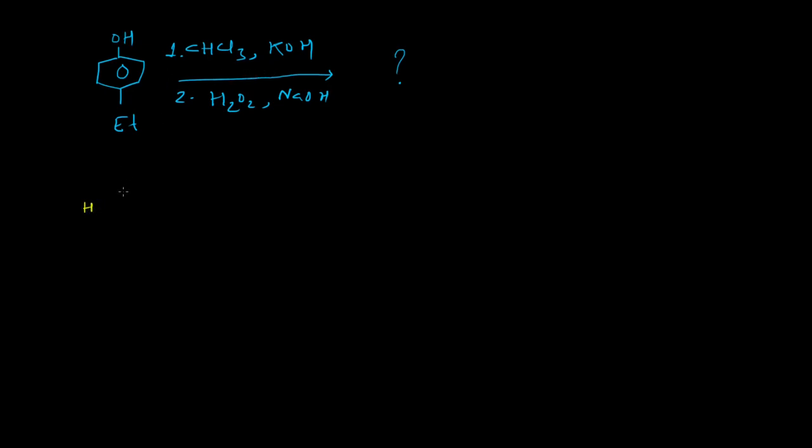Initially, the first step will be the Reimer-Tiemann reaction. I am doing the mechanism of Reimer-Tiemann reaction once again. In presence of strong base like potassium hydroxide, an alpha elimination will happen into the chloroform moiety and thereby dichlorocarbene will be generated into the reaction medium, which is of singlet character.